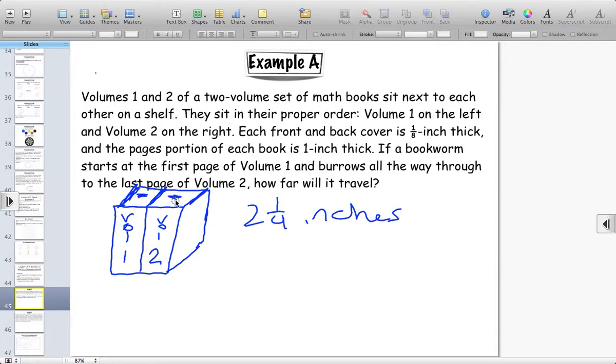I already got two and one-fourth inches that the bookworm traveled, eating through, burrowing his way through the textbooks. It seems pretty reasonable. Each of these segments right here are 1/8 inch, and then you have an inch of pages on the inside. So if they're starting on the first page here, going all the way through, getting to the covers, and then going all the way through, that seems like they're going to be two and one-fourth inches. But, unfortunately, that is not the correct answer.